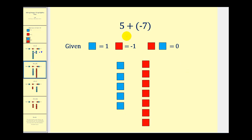Now if we want to consider five plus negative seven, positive five would consist of five blue squares, and negative seven would consist of seven red squares.